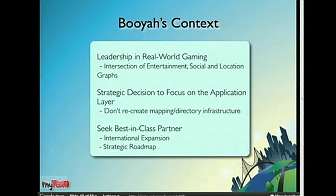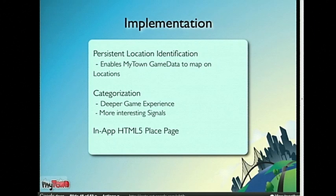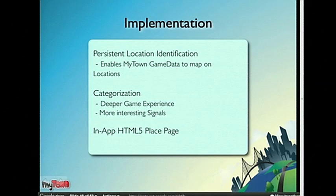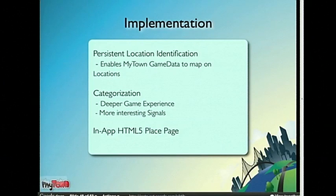In terms of implementation, a couple of key differences with the new services. One is persistent location identification — you need a stable ID. If you want a game where Pete's Coffee has an ID and you layer gaming information on top of it, that ID needs to be stable. Categorization is also really important because it makes the game more fun and provides more interesting signals. Another cool aspect was the HTML5 place page integration — MyTown is a native iPhone app, and having a client app married with a dynamically updating web page is a good combination.